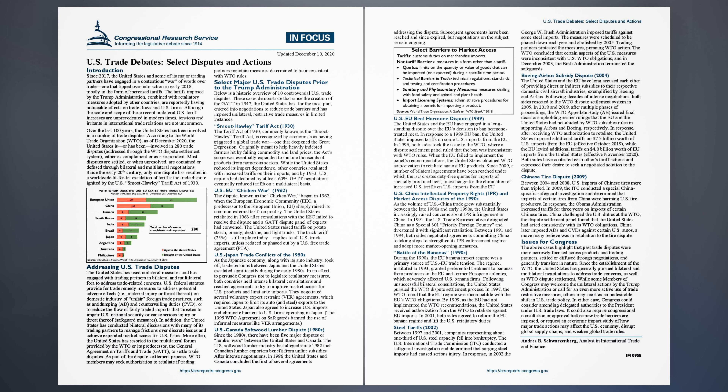U.S.-EU Chicken War, 1962: The dispute known as the Chicken War began in 1962, when the European Economic Community (EEC), a predecessor to the European Union (EU), sharply raised its common external tariff on poultry. The United States retaliated in 1963 after consultations with the EEC failed to resolve the dispute and a GATT dispute panel of experts had convened. The United States raised tariffs on potato starch, brandy, dextrin, and light trucks. The truck tariff of 25%, still in place today, applies to all U.S. truck imports, unless reduced or phased out by a U.S. Free Trade Agreement (FTA).